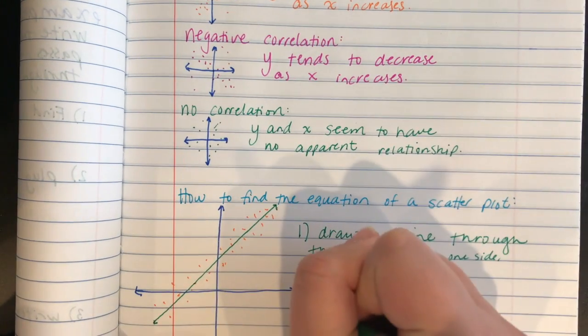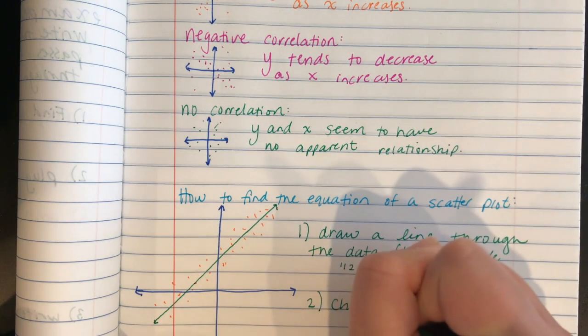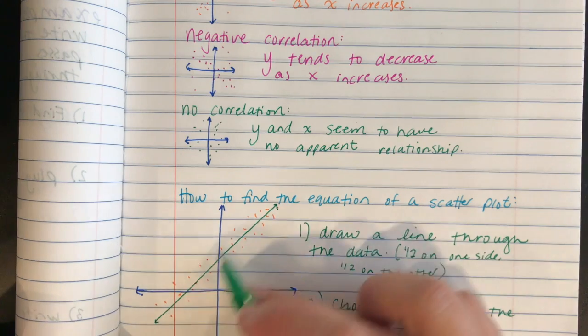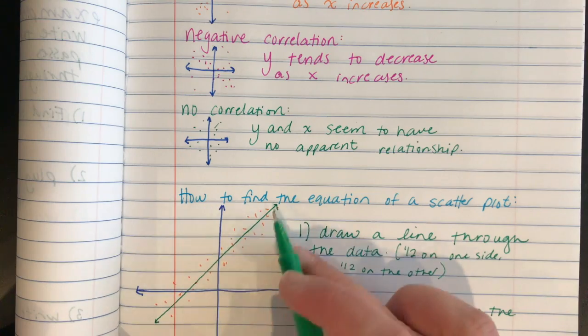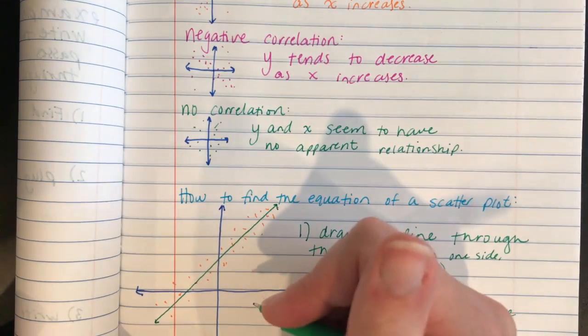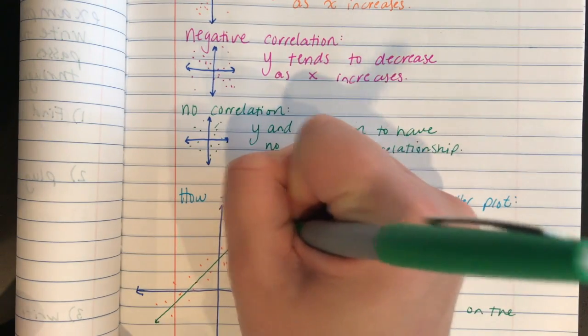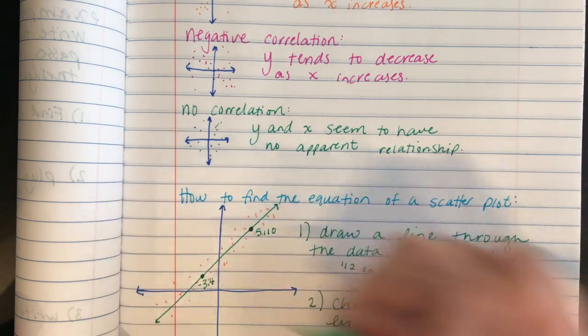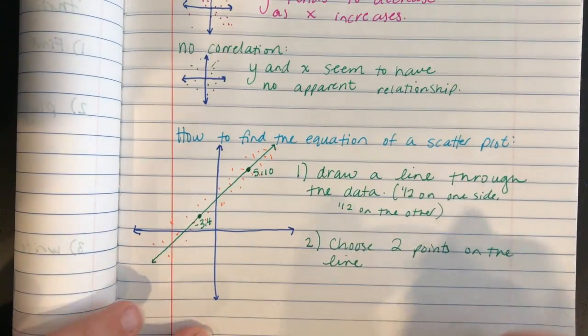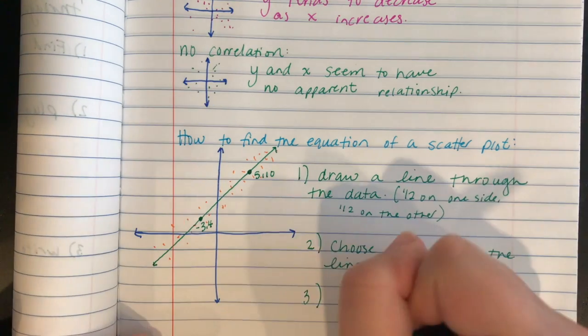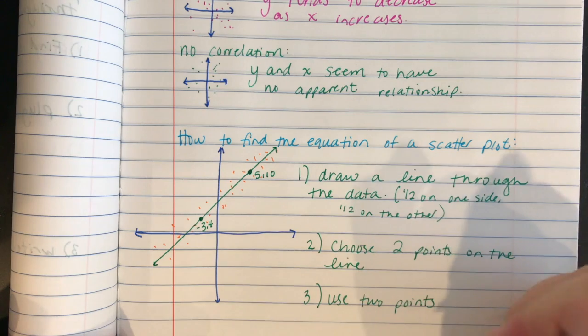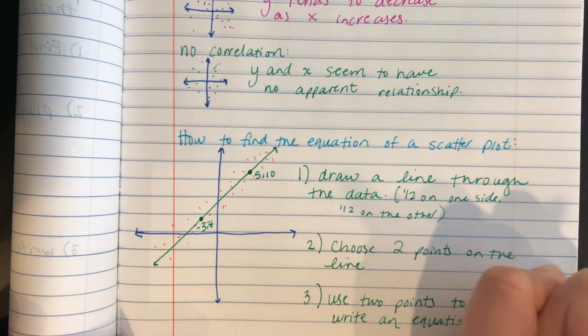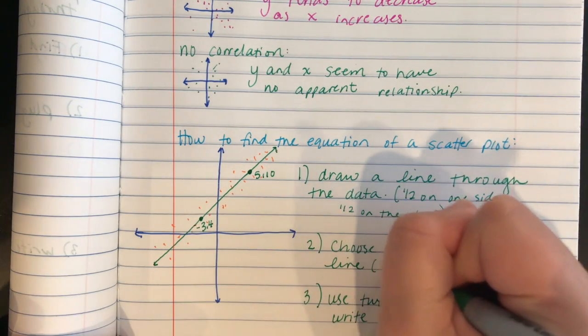Step two is I would choose two points on the line, and they could be points that are already there, they don't have to be. What I would look for, especially if you're using a graph that has grid marks, which you likely are, is to choose two points that line up with the grid marks that are positive numbers. So let's say that this one here was like five comma ten, and this one here was like negative three comma four. And then from there, which we're not going to do this just for sake of time, is you would use the two points to write an equation.